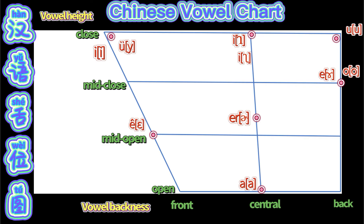Now you know that in Mandarin Chinese there are 10 simple vowels, and you know how to read them in a vowel chart.